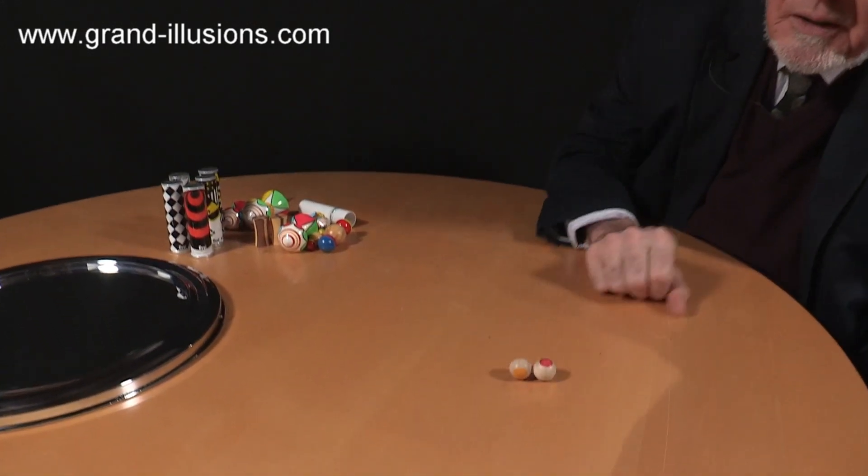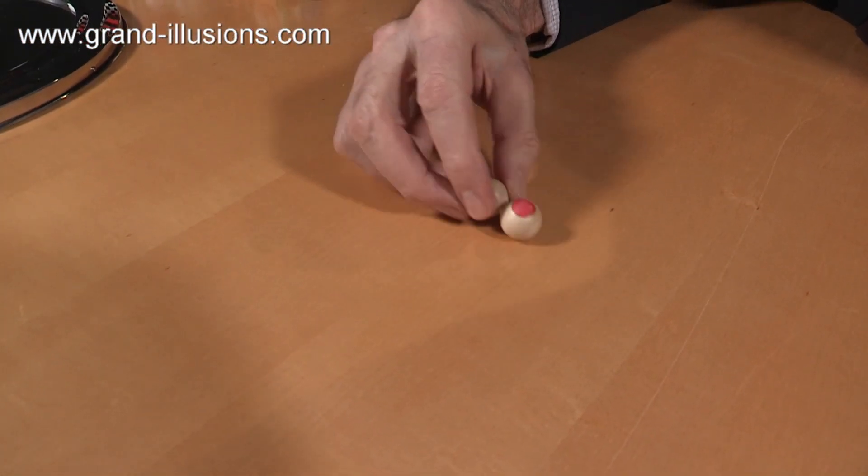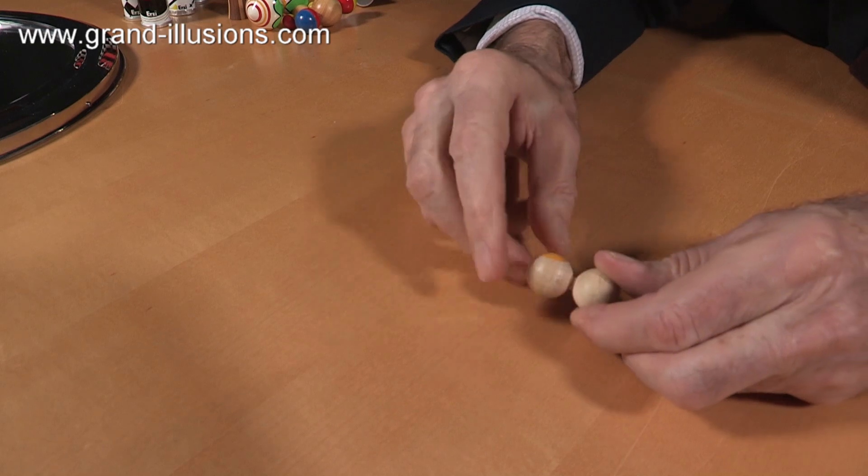Here's one of the earliest ones I ever got. It's just two balls of wood, one's got a red spot on it, and one's got a yellow spot on the other side, like that.